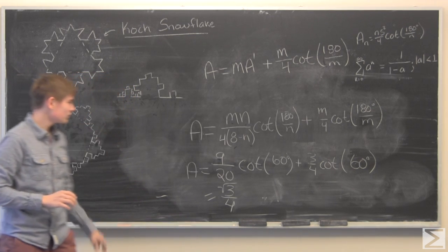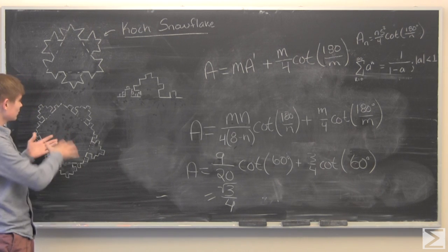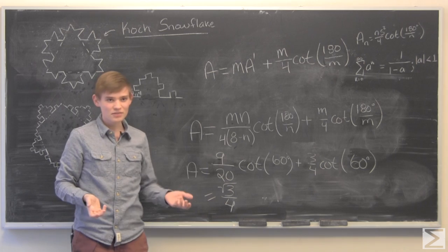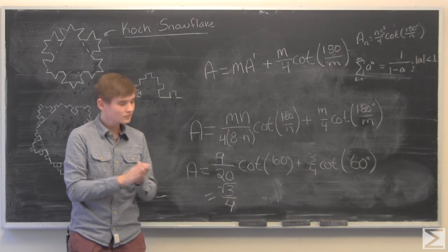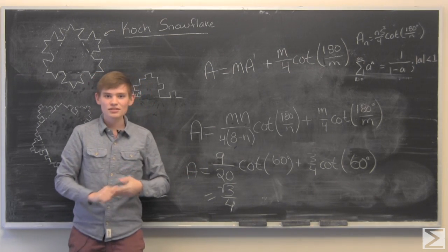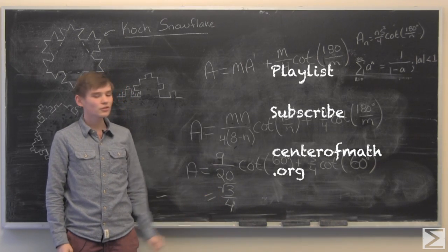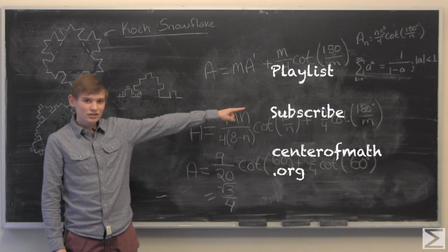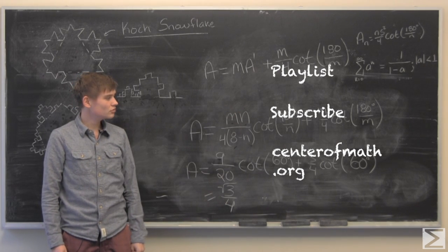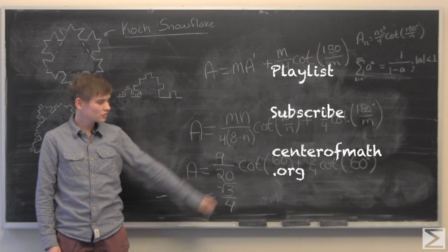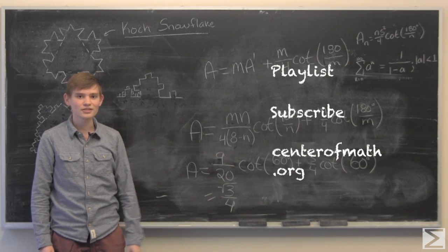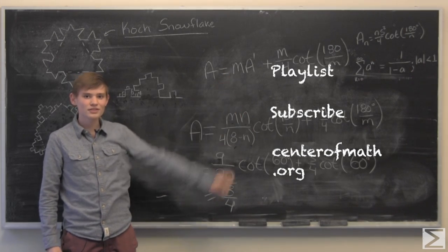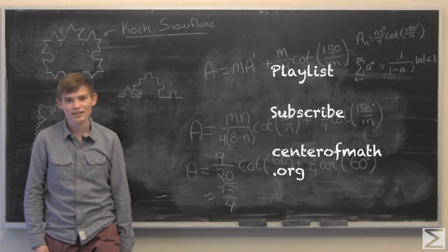I encourage you to try different generalizations of the Koch snowflake — maybe different lengths of sides. There's a lot to unpack here and you could approach it completely differently. For more problems like this, you can click right here. To subscribe to our YouTube channel, click right there. To go to centerofmath.org, click there. If you're on a mobile device, there is an 'I' in the top right-hand corner of the screen with all of these same links. Thank you very much for watching and happy holidays.